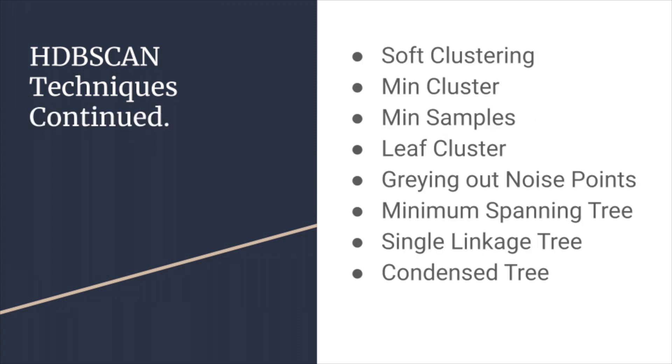Jumping into just some of the things that HDBScan allowed us to use, some of the visualizations that you'll see later. We have these listed here with soft clustering, minimum clusters, minimum samples, along with leaf clusters and being able to gray out some noise points. And then we jumped into a few trees being minimum spanning, single linkage, and condensed trees.